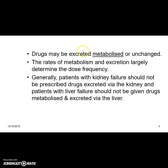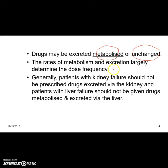Drugs may be excreted after having undergone metabolism, or they can be excreted unchanged. The rate of metabolism and excretion will likely determine the dose frequency — whether you give the drug every 10 minutes, every hour, every 3, 4, 8, or 12 hours, once a day, every week, fortnight, or month. The rates of metabolism and excretion together determine how frequently a drug is administered.